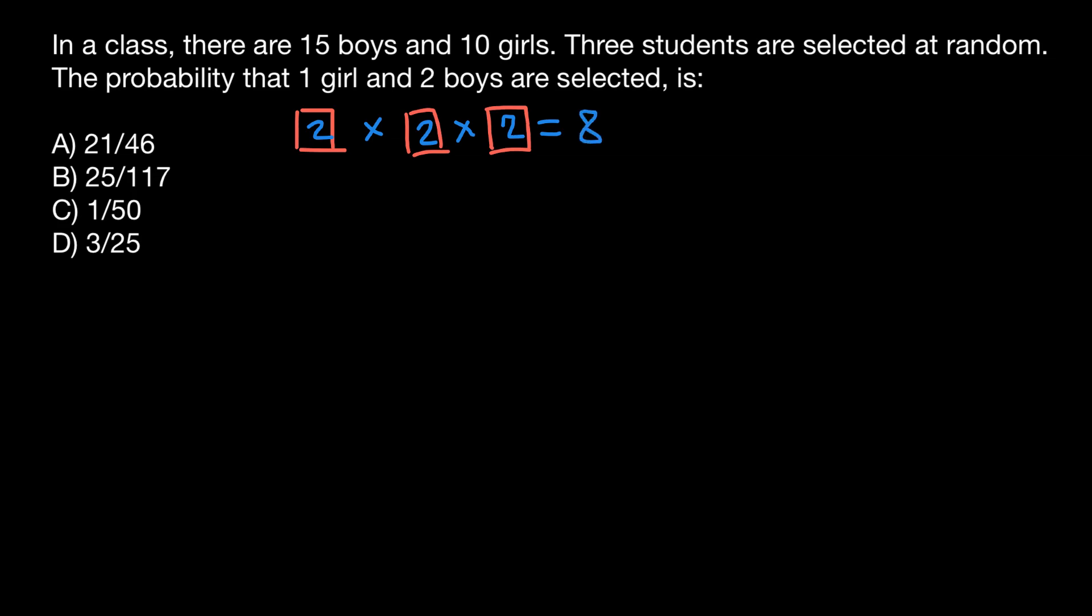So we would have eight variants total. We would have a total number of eight variants for how we can choose three people. Let's list all these variants. For example, we can choose that all three would be girls: a girl, a girl, and a girl.